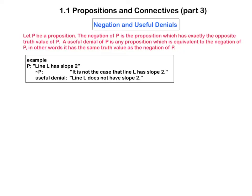For example, if P says line L has slope 2, the negation would read it is not the case that line L has slope 2. That's not hard to understand, but it might be a bit better instead to say L does not have slope 2.